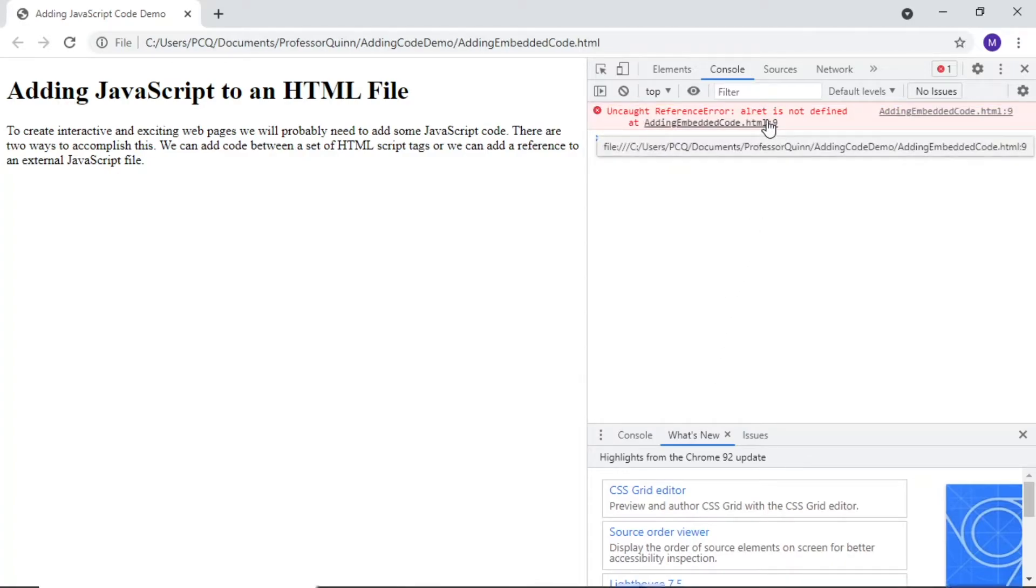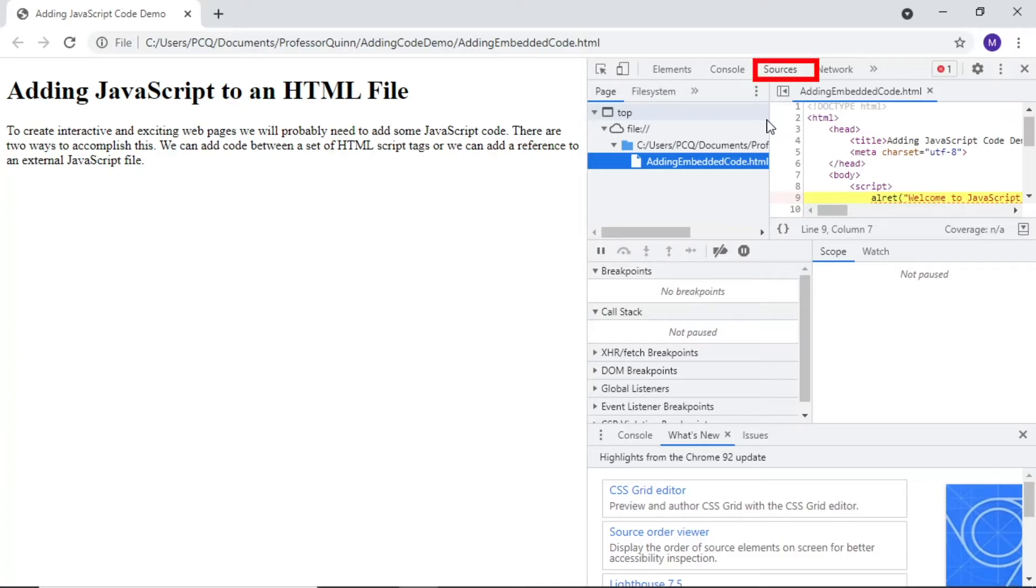We can click on the line number to see the code in the sources tab with the line number flagged in a wavy underline. Notice we can go back and forth between the console and the sources tab if needed.